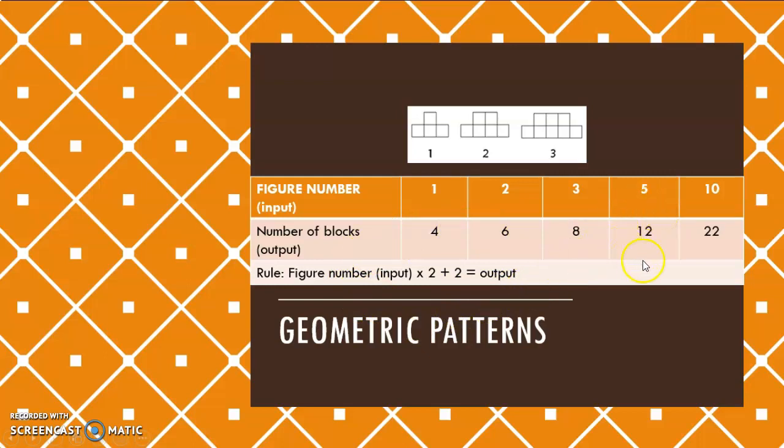So now if I ask you, how many blocks will my 5th term here have? Or if it's my input that is 5, what will my output be? So I apply my rule, 5 times 2 is 10, plus 2 will give me 12.